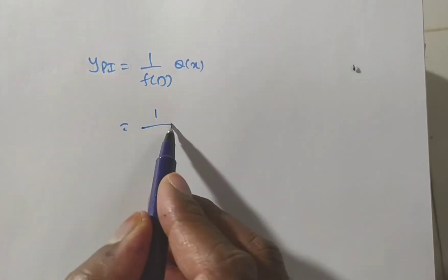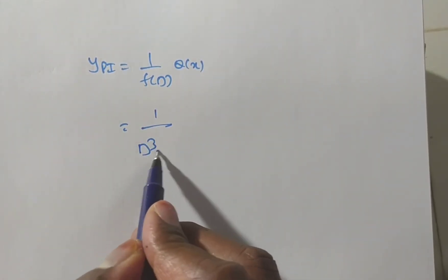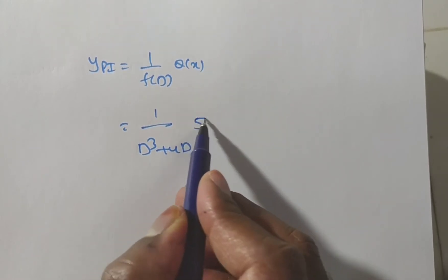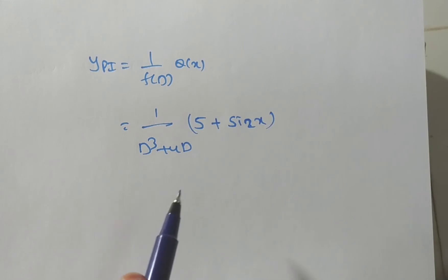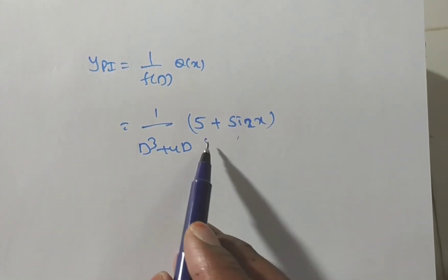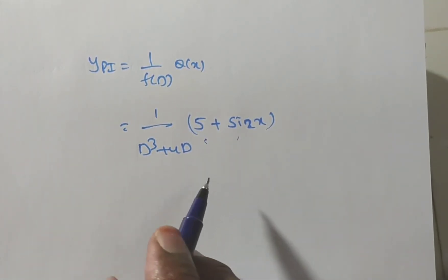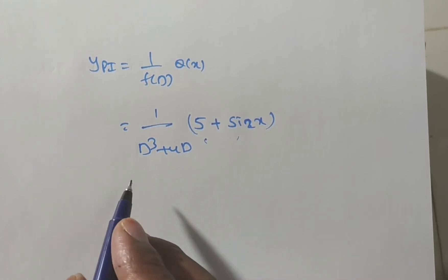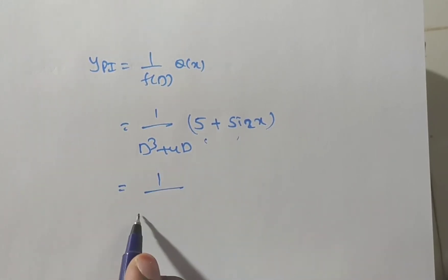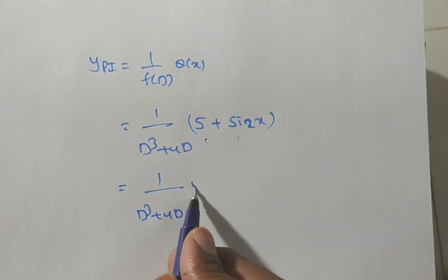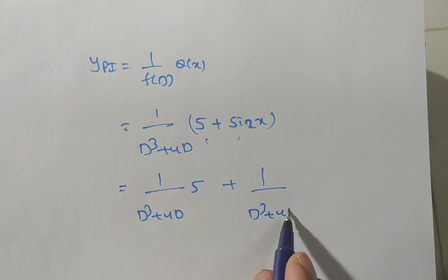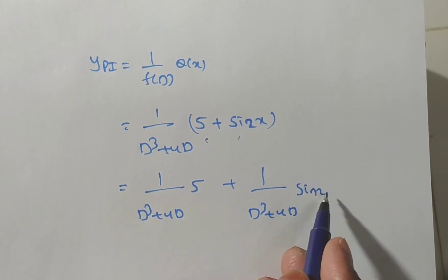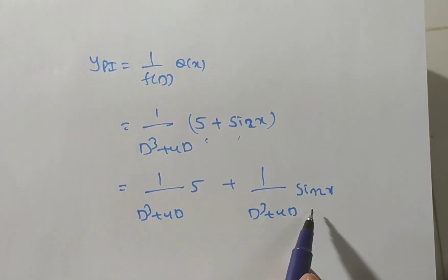Here f(D) = D³ + 4D and Q(x) = 5 + sin(2x). Since Q(x) contains a sum of two terms, we can separate them: PI = 1/(D³+4D)·5 + 1/(D³+4D)·sin(2x). One is a constant and the other is a sine function, so we apply the shortcut method.